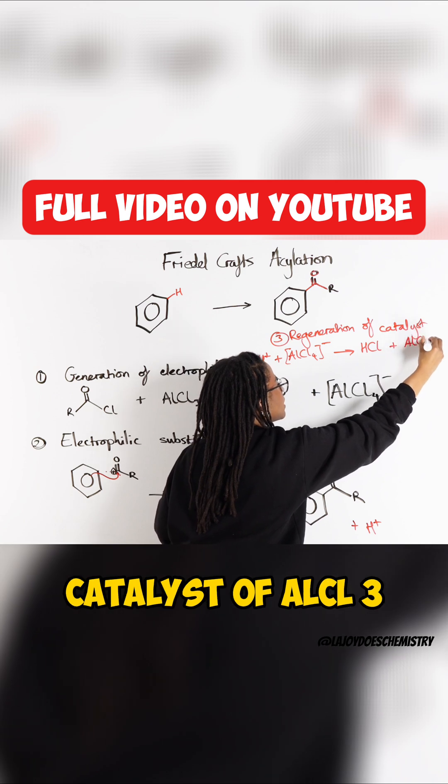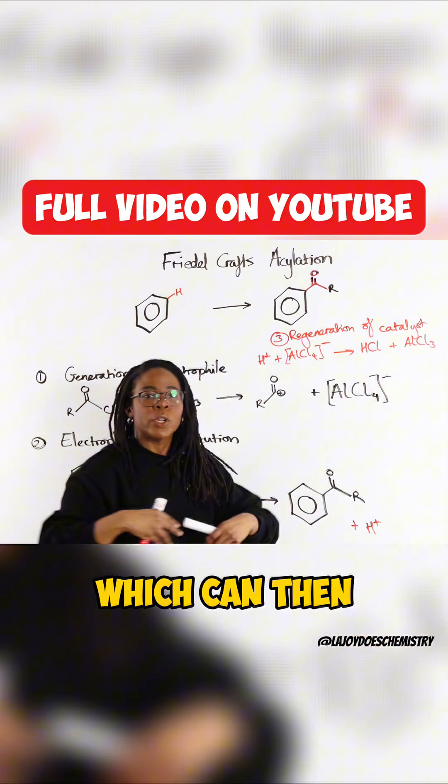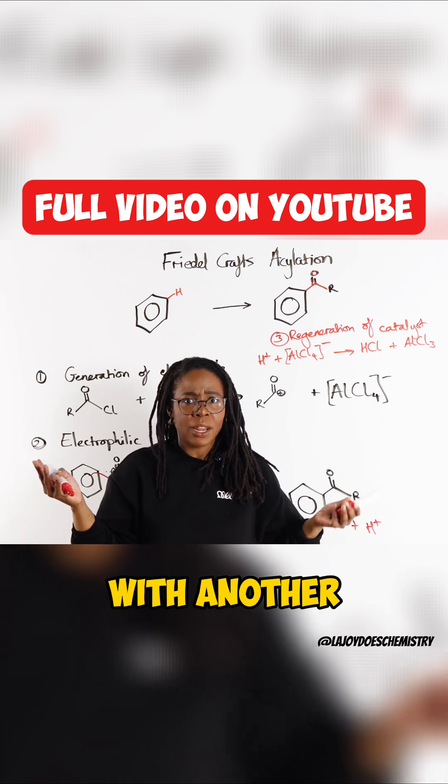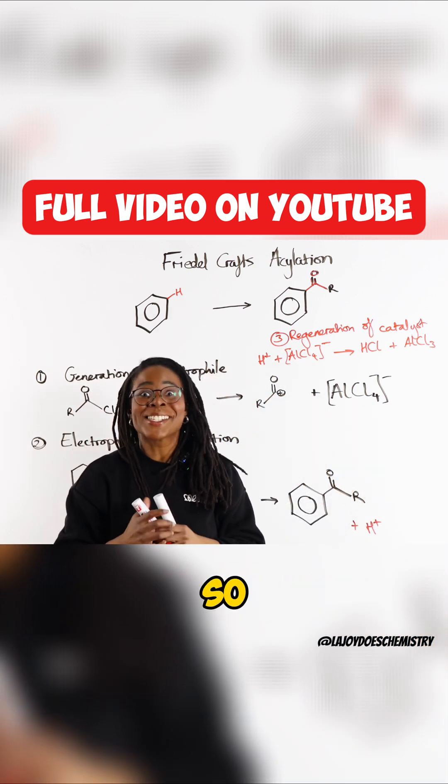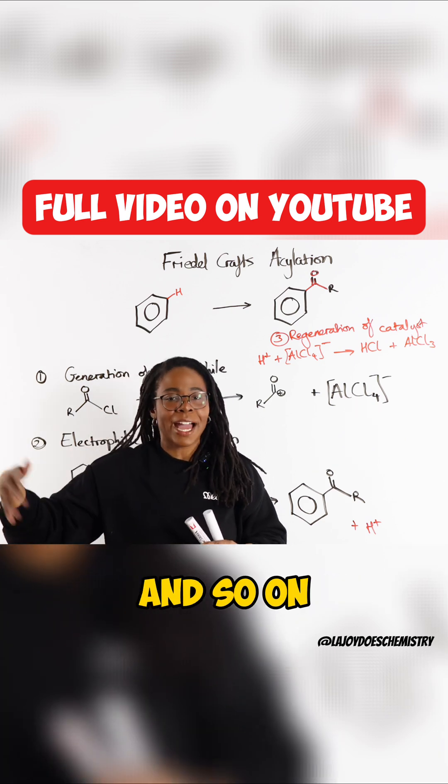and regenerate our catalyst of AlCl3, which can then go on and react again with another benzene ring and another, well not with the benzene ring, with another acyl chloride. So then that electrophile can react with the benzene ring and so on and so on and so forth.